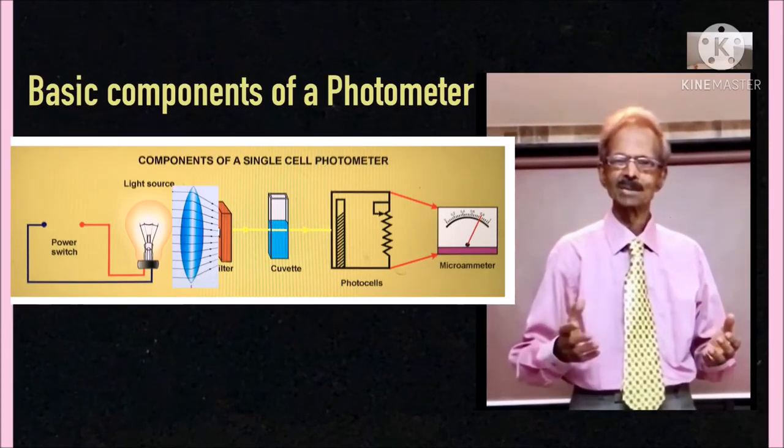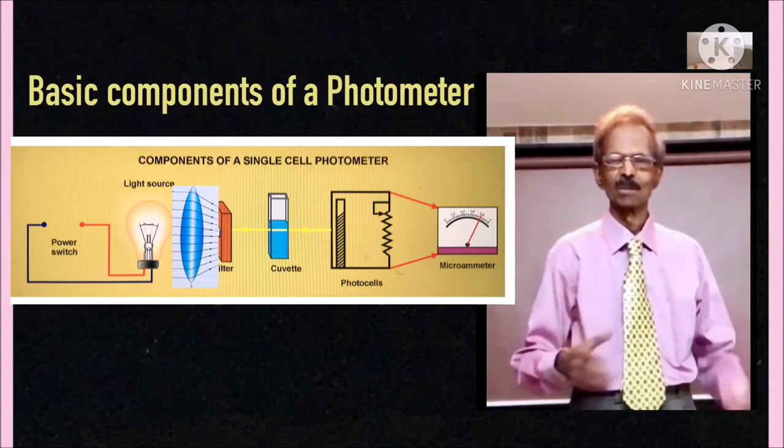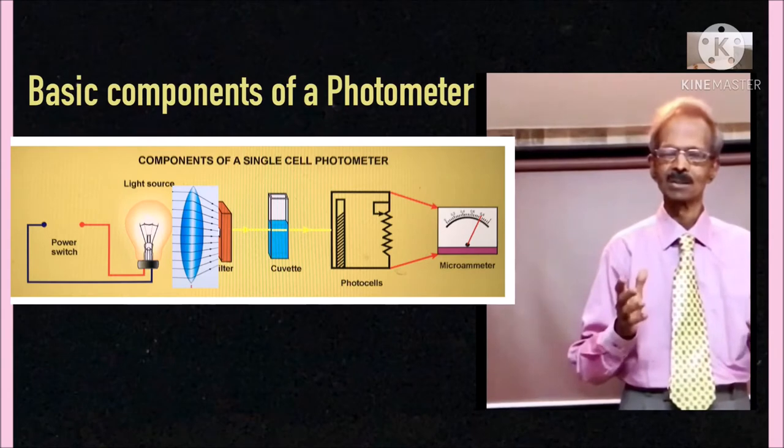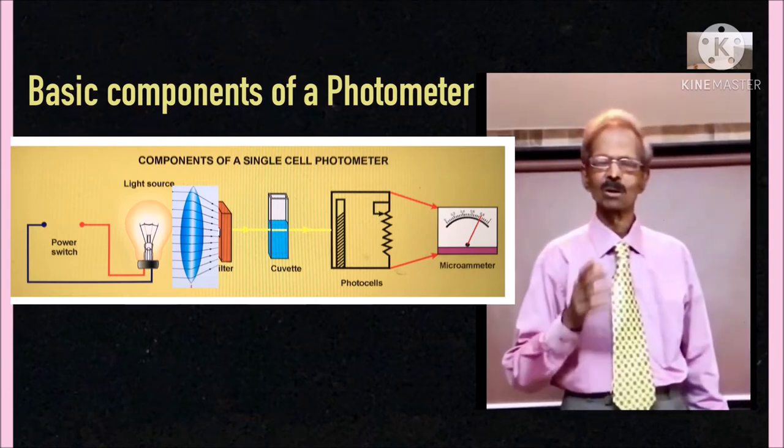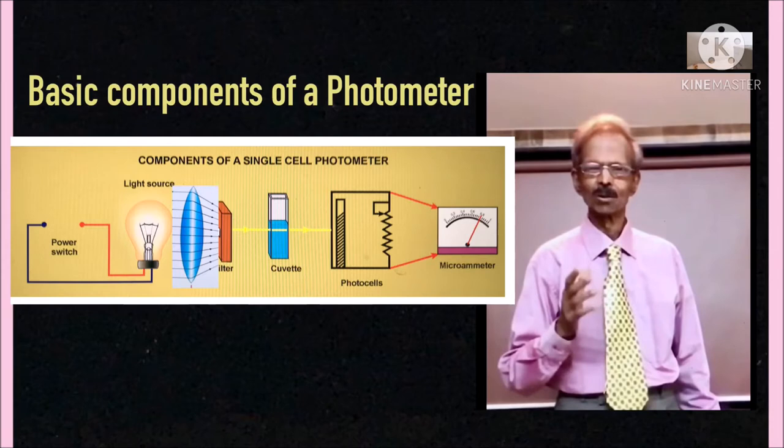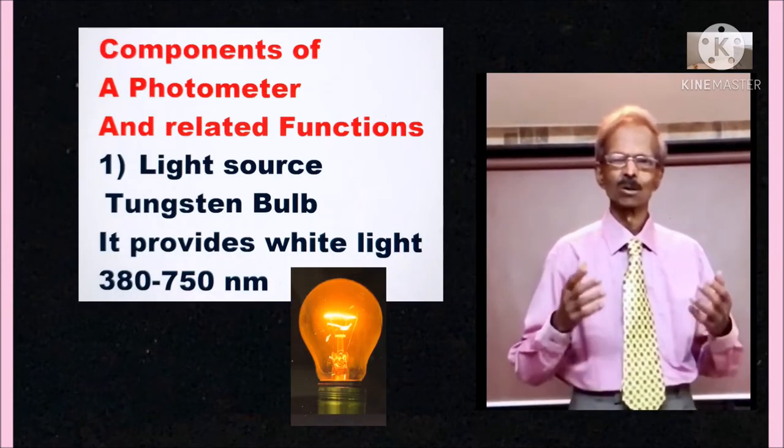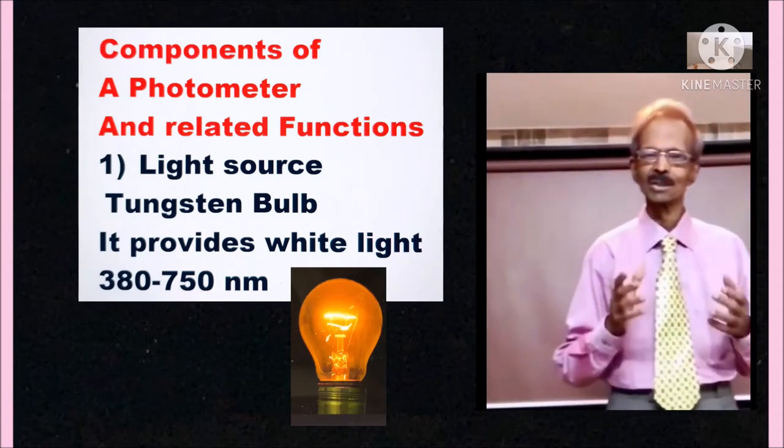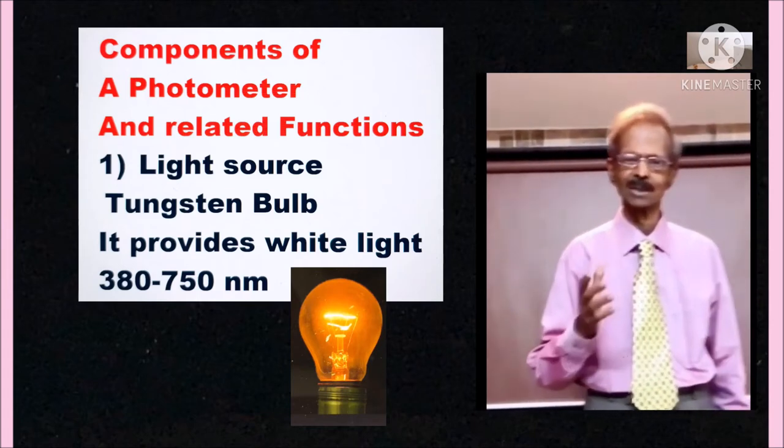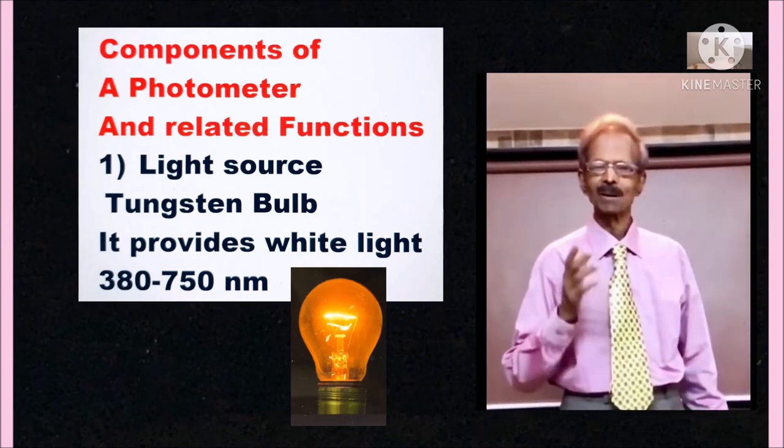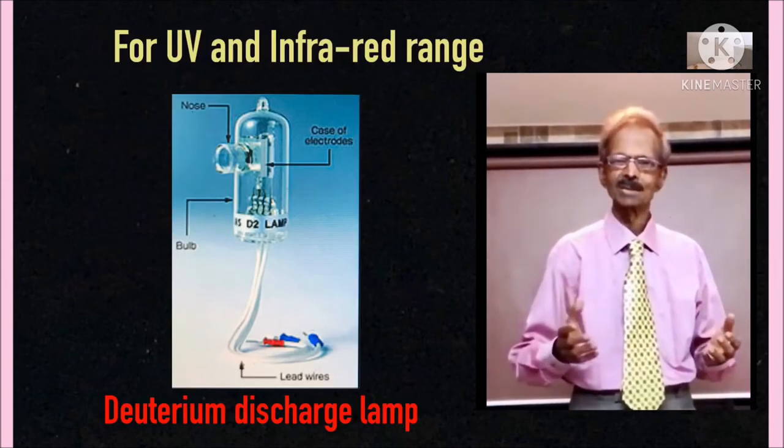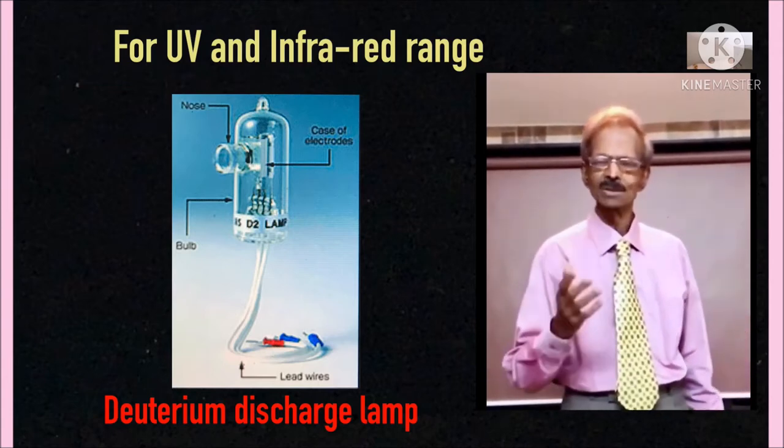By now you must have understood the basic components of a photometer. We will discuss now each component with its specific function. Component 1: light source. It is one tungsten bulb which gives white light. If UV range and infrared ranges are required, then a special type of bulb like high-pressure hydrogen or deuterium discharge lamp is used.